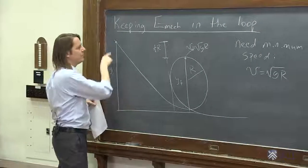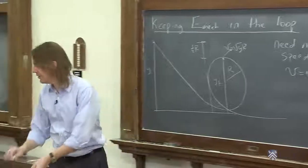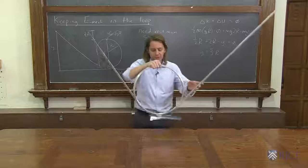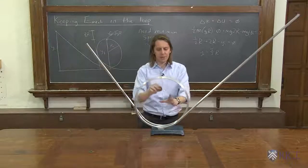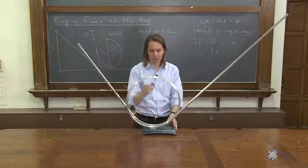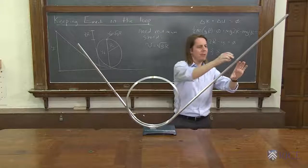So according to that, if we release it from that height, it should just barely make it around the loop. So let's see if that height works. Let's see. We get it back out. Here's the ball. Now I've marked it off. You've got to kind of consider the position of the center of mass of the ball here and here. That's the circle.